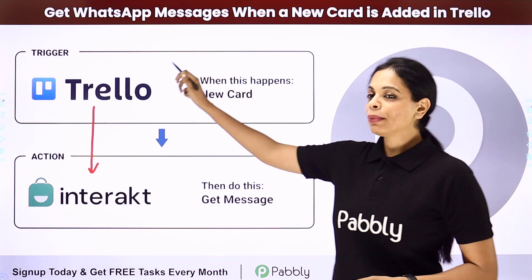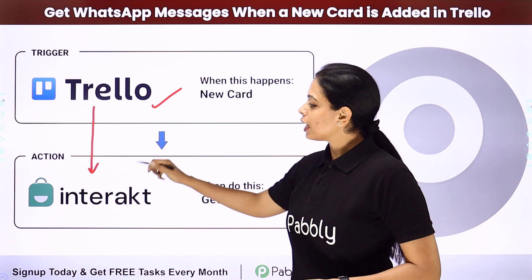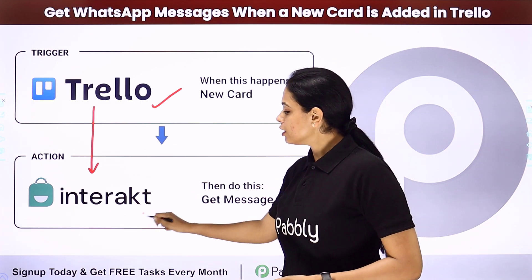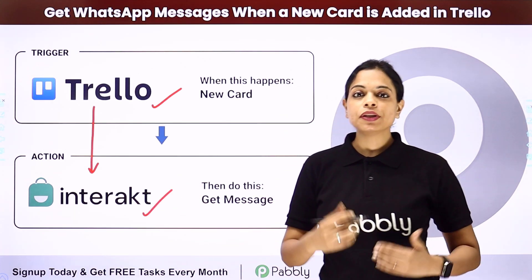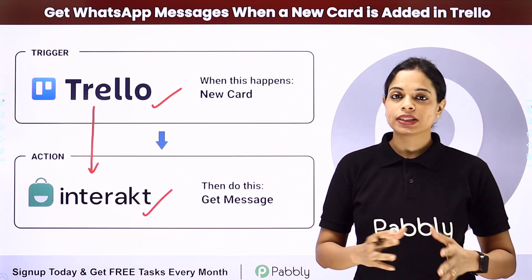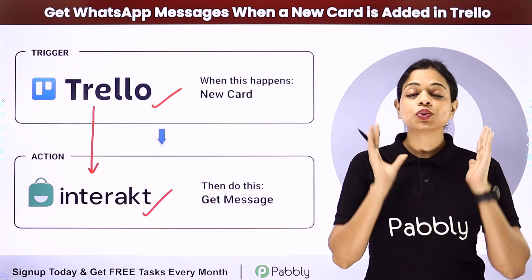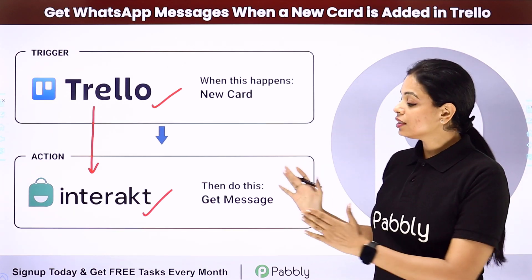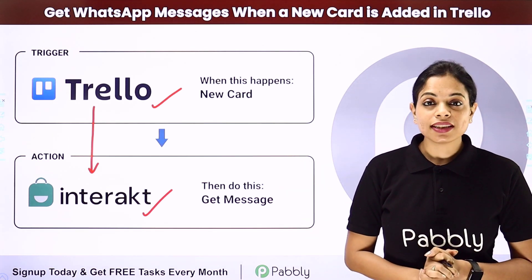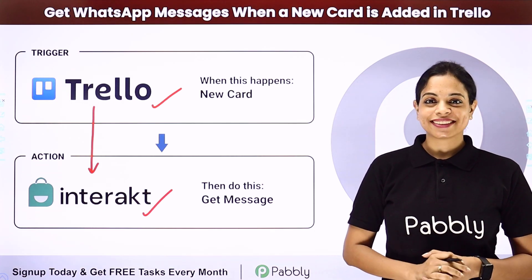Here, your trigger application will be Trello and your action application will be Interact, which helps in sending WhatsApp messages. To understand how to integrate and automate this entire process, let me take you to my screen.